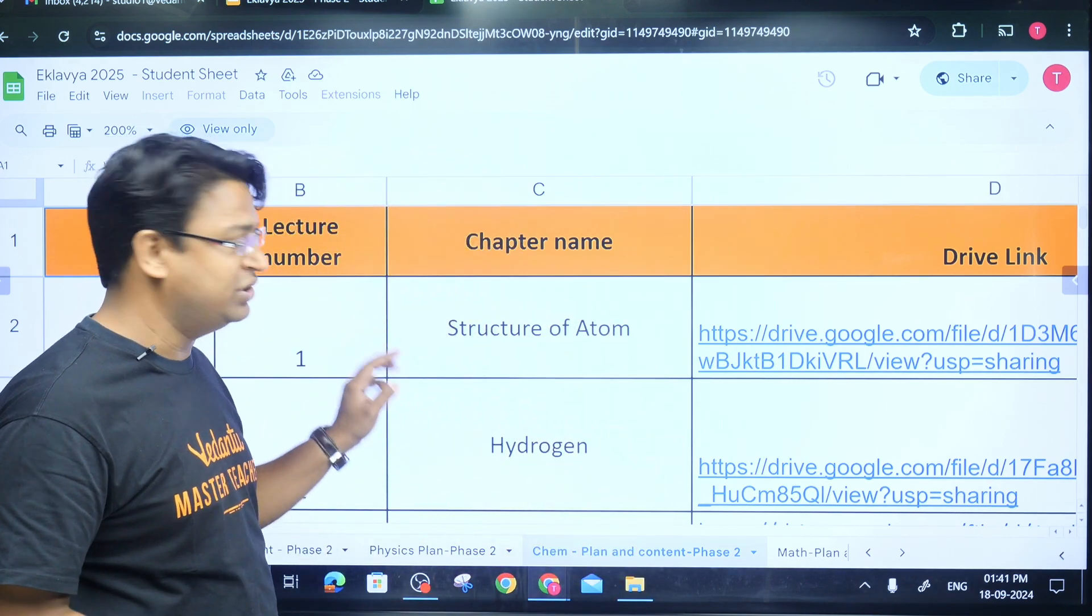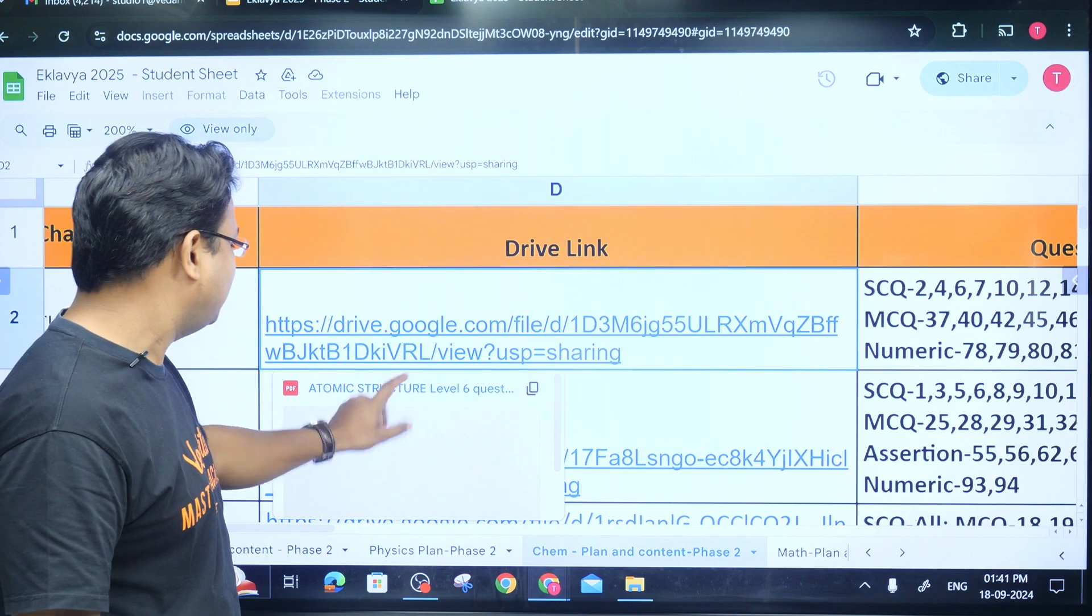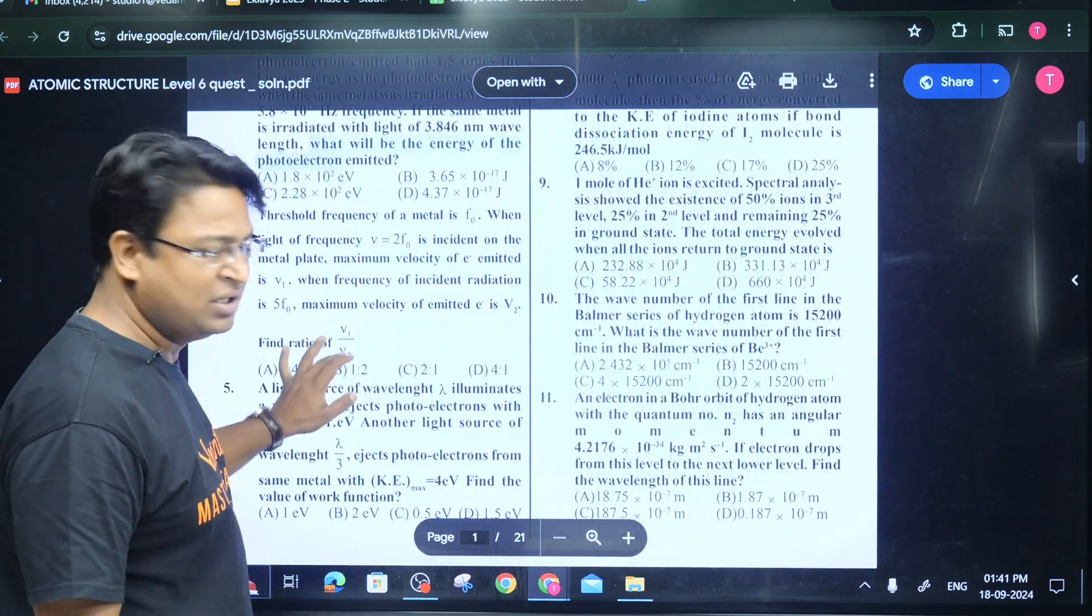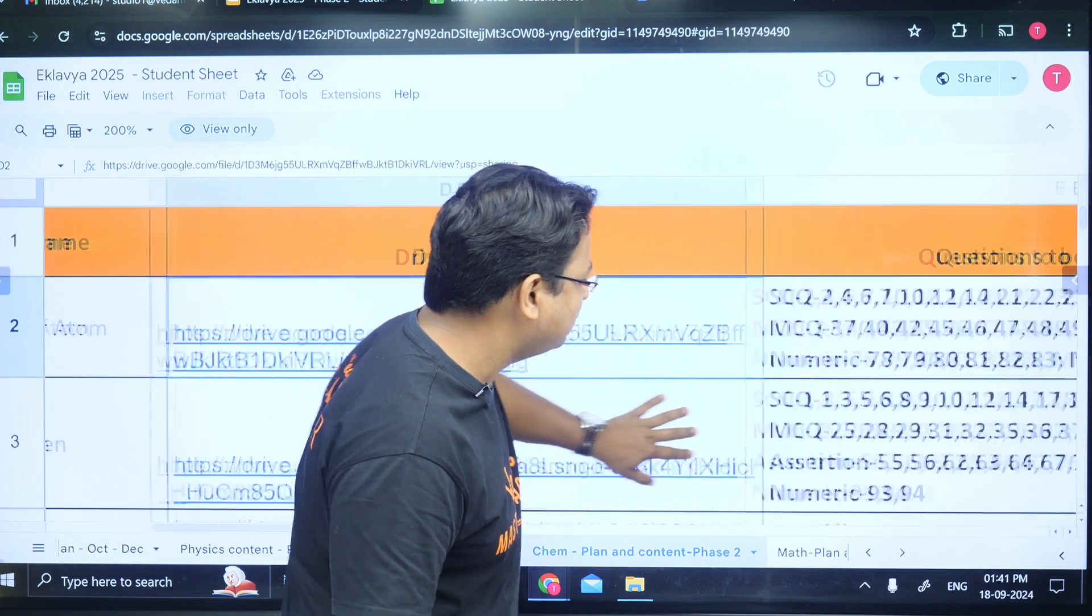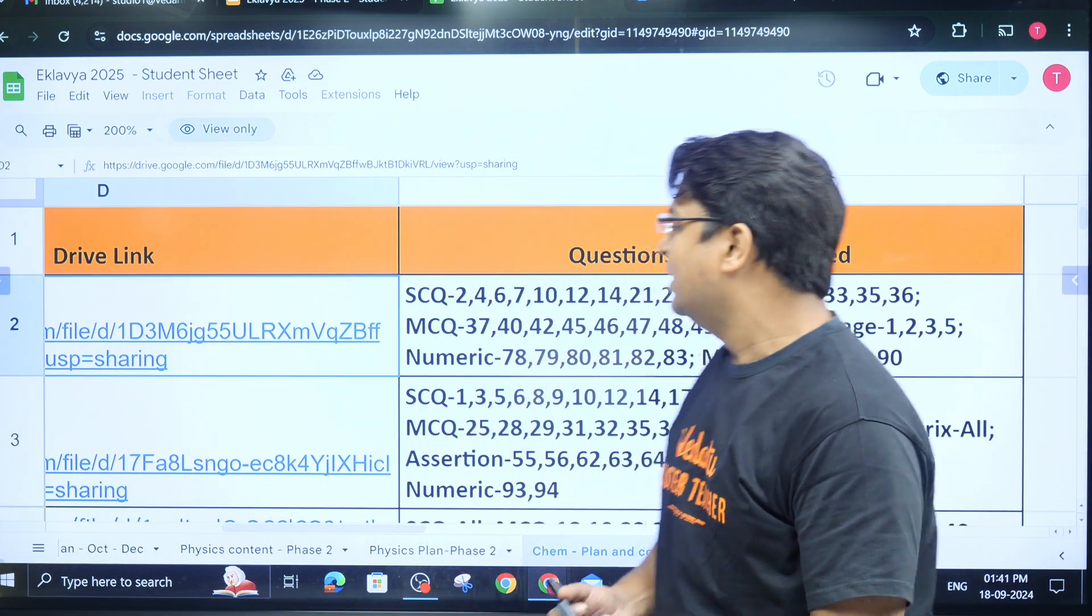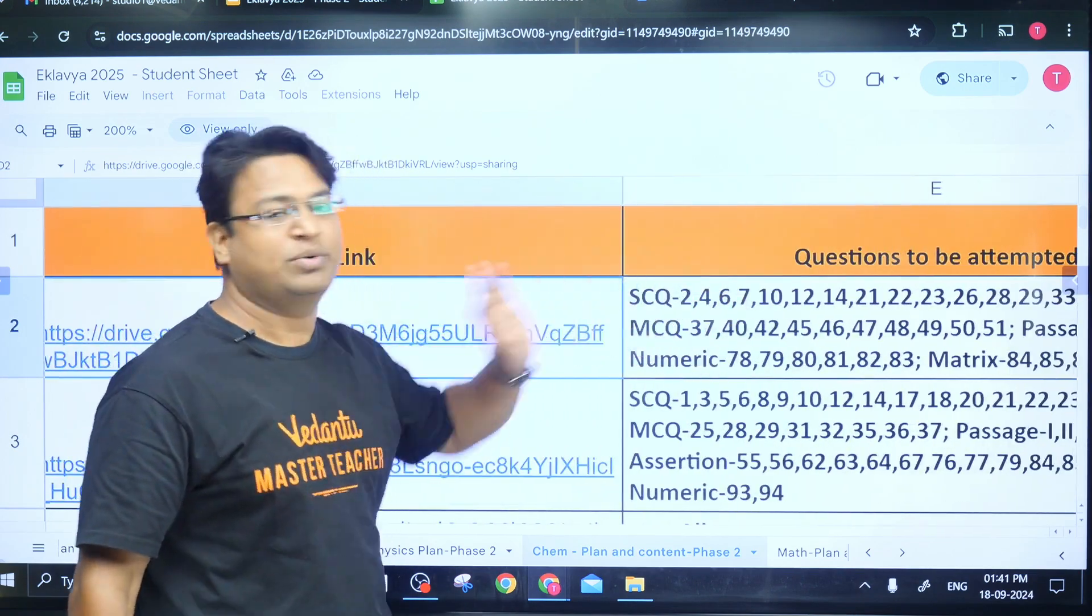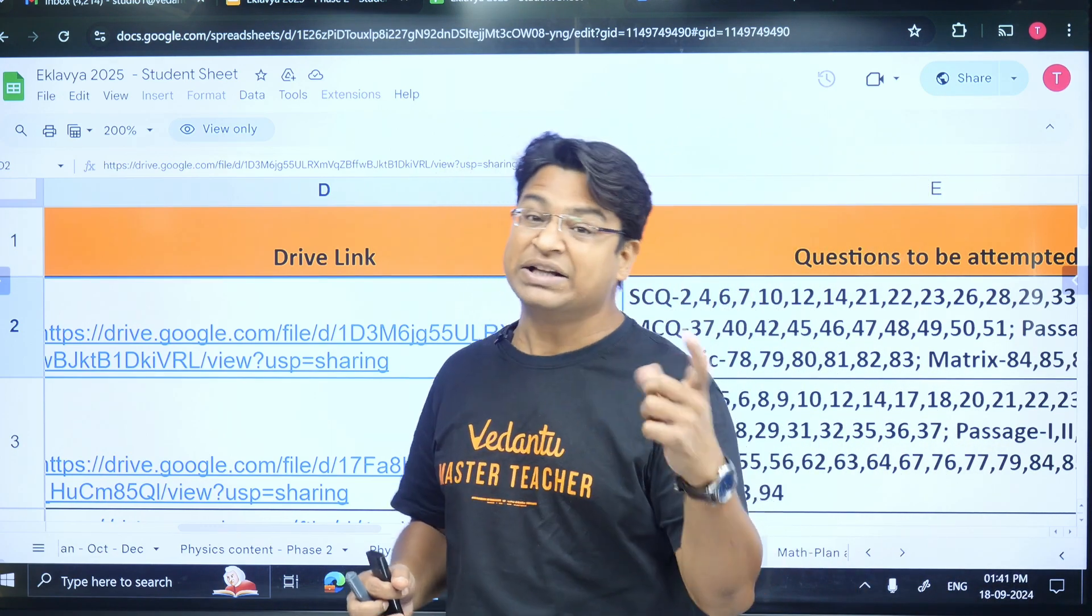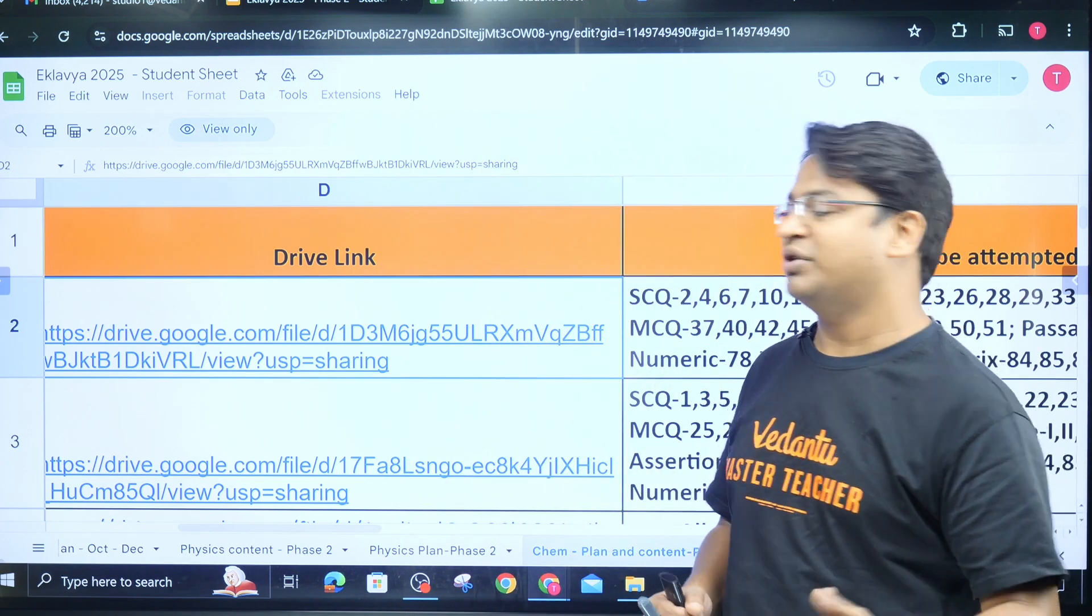In chemistry, this is week number one, lecture number one. Total of 22 lectures are going to happen. In lecture number one, we are going to discuss structure of atoms. Before this lecture, you have to actually attempt questions. Click on this link and a PDF will open - this is a question bank. Are you expected to do all the questions? No. We have made a short list of questions for you that you are expected to solve. The expectation is that before you join this particular class, you should have attempted all these questions. Therefore the gap between Phase 1 and Phase 2 is to ensure that you get a headstart in your solving so that you complete your homework and then join the session.